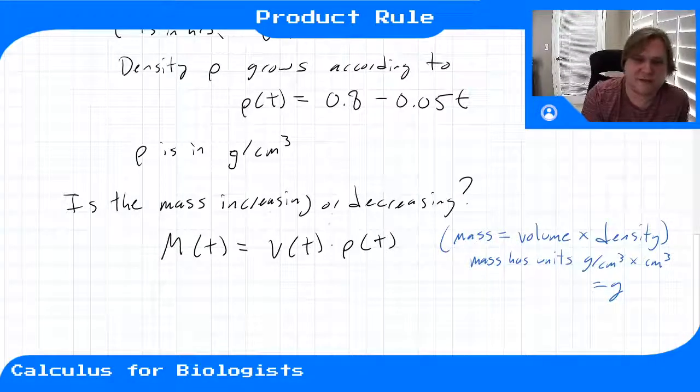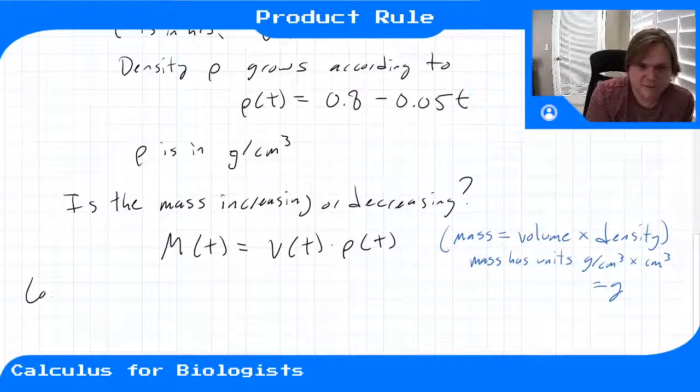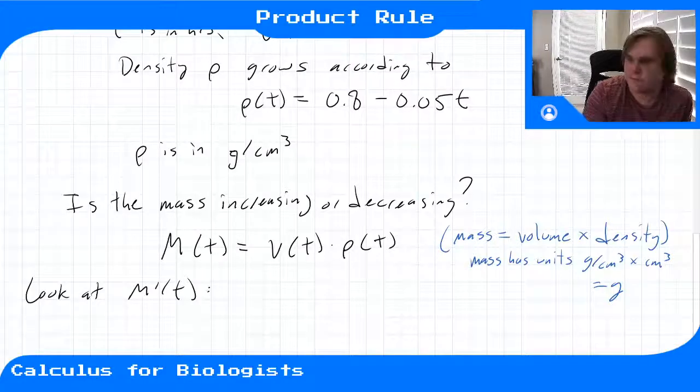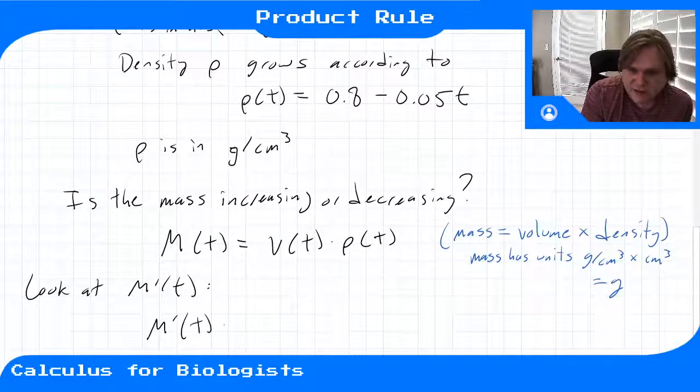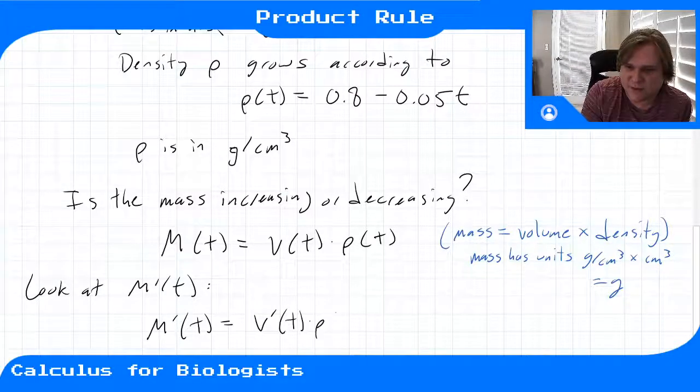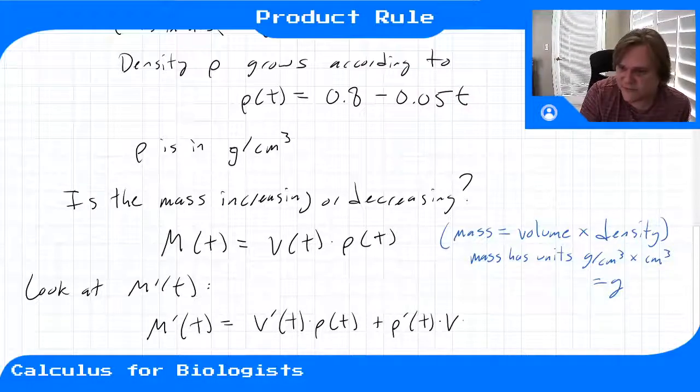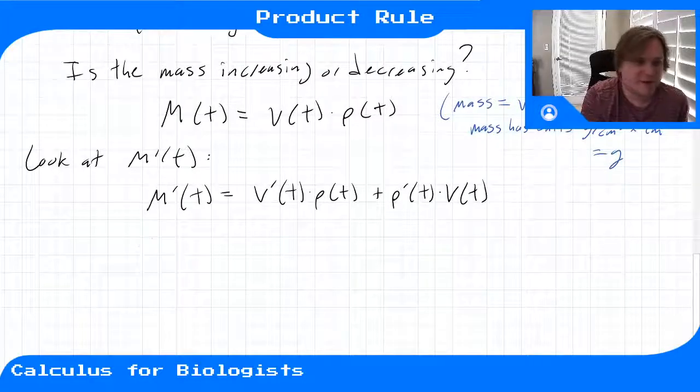So then to find whether or not the mass is increasing or decreasing, we need to look at the derivative at m prime of t. M prime of t by the product rule is going to be v prime times rho plus rho prime times v. That's just the product rule. So let's write this out.